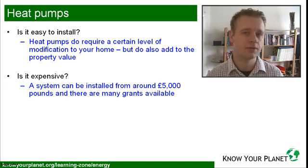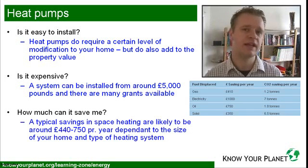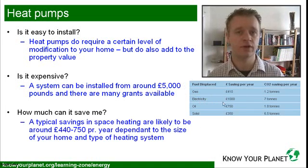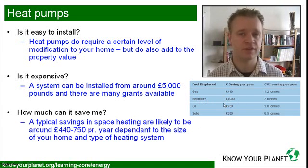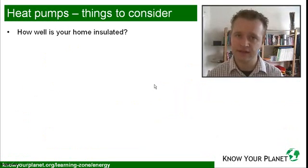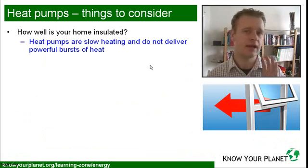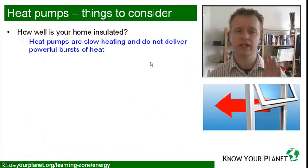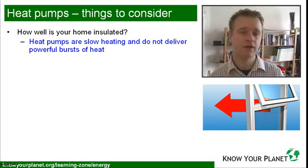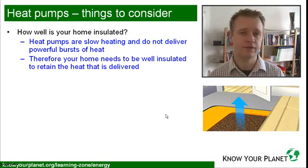You have to check your options and see what's best for your home. How much money can this save you? Looking at this chart, if you're normally using electricity to heat your house, you could probably save over £1,000 every single year, and also 7 tons of carbon dioxide — which is incredibly important. But it depends on what kind of system you already have. There are some things to consider when installing a heat pump: first, you need to look at how well your home is insulated. Heat pumps are slow heating — they won't deliver powerful bursts of heat like an oil radiator — so it's important to make sure your windows and floors aren't leaking heat.